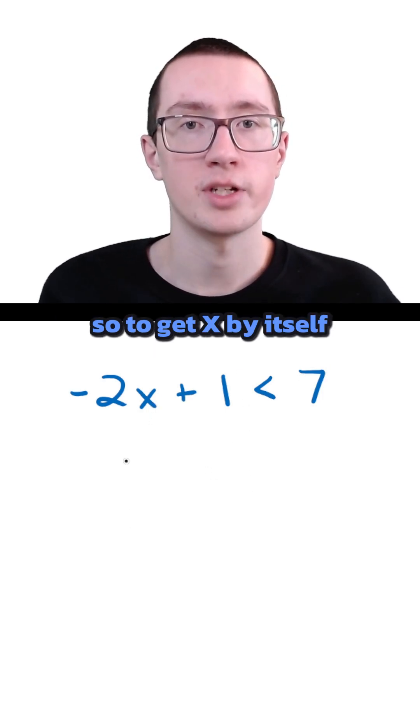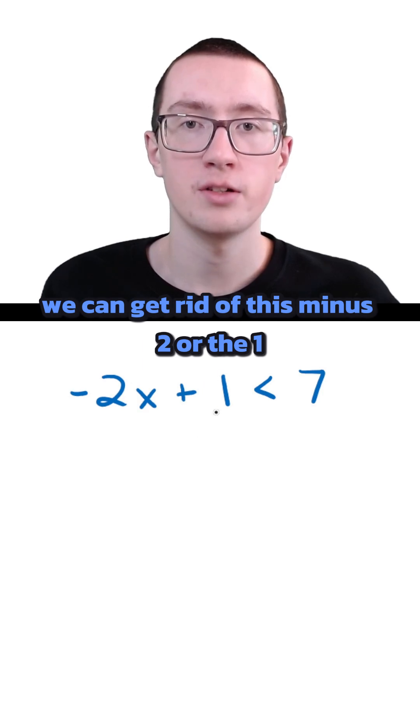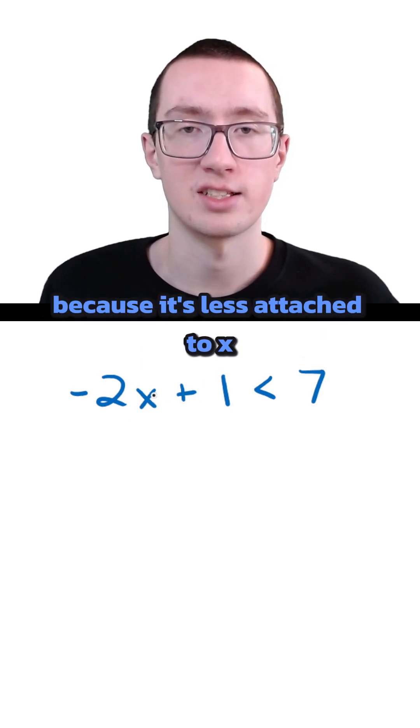To get x by itself, we can get rid of this minus 2 or the 1. I'll get rid of the 1 first because it's less attached to x.